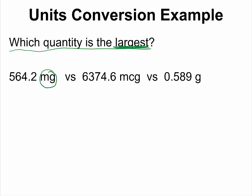One has a unit of milligram, one has a unit of microgram, and the last has a unit of gram. The easiest way to solve this problem is to convert all of them to the same unit so that we can easily compare apple to apple.